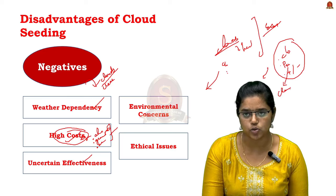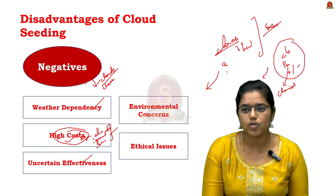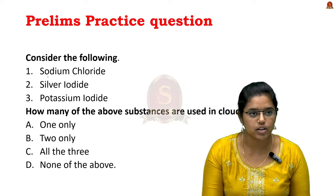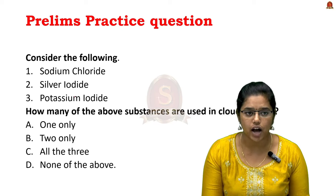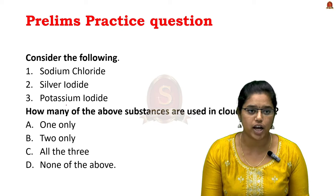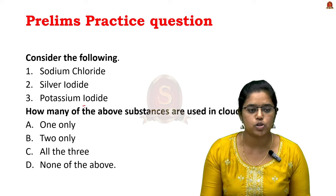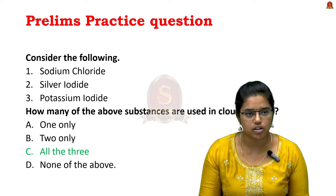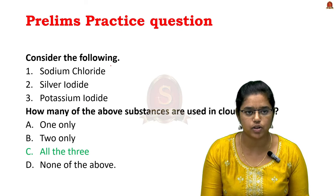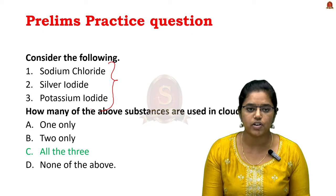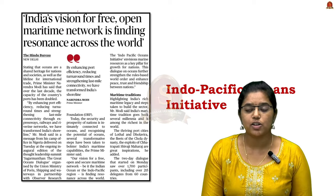A prelims practice question: 'Consider the following — sodium chloride, silver iodide, potassium iodide. How many of the above substances are used in cloud seeding?' The answer is all three — all these chemicals are used in cloud seeding technology. With this we conclude the discussion on cloud seeding.